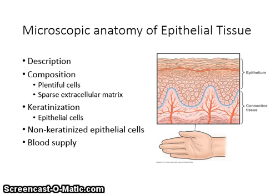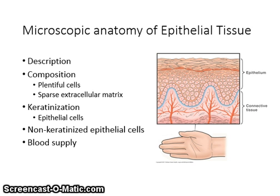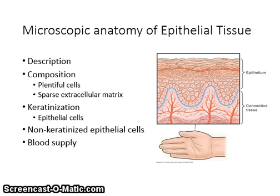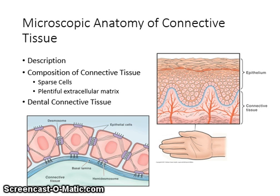The basal lamina separates the underlying connective tissue from the epithelial cells. Cell junctions attach one epithelial cell to another. There is a wavy tissue boundary between the epithelium and connective tissue. The cementum, dentin, alveolar bone, and pulp are specialized forms of connective tissue. The enamel, however, is an epithelial tissue.